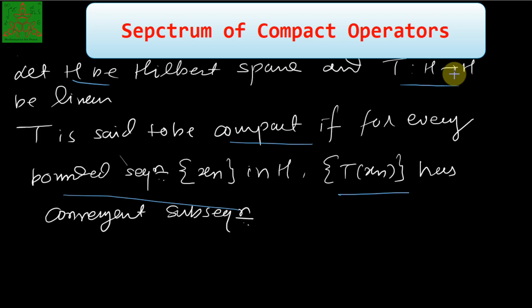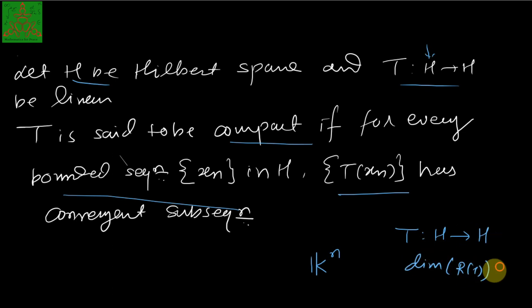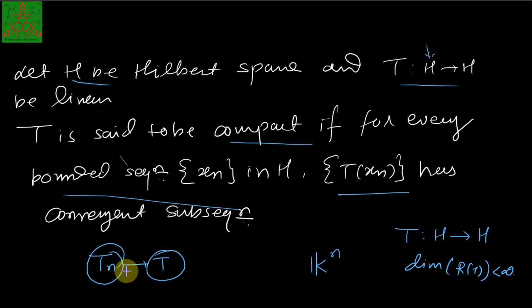We discussed certain results on compact operators. We have seen that a bounded linear operator defined on K^n is always compact. We also proved that a compact linear operator is always bounded, but the converse is not true. We proved that if T is a bounded linear operator from H to H and the range space of T is finite, then T is compact. We also proved that if T_n converges to T and each T_n is compact, then T is also compact. And if T is compact, then its adjoint is also compact.